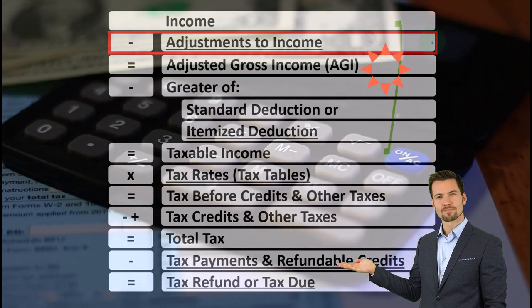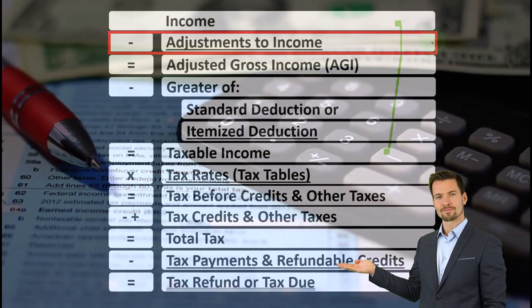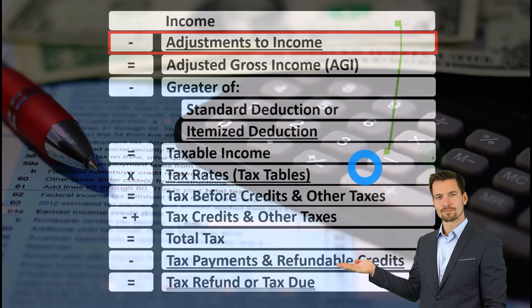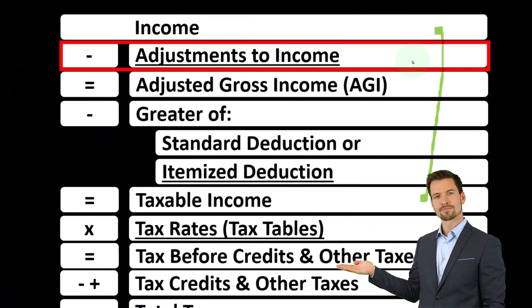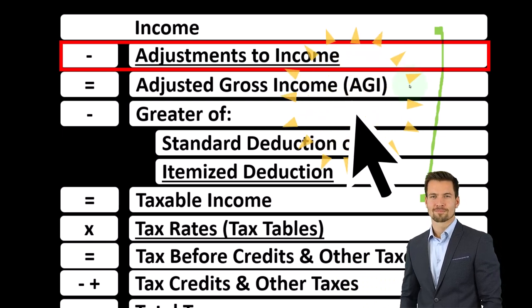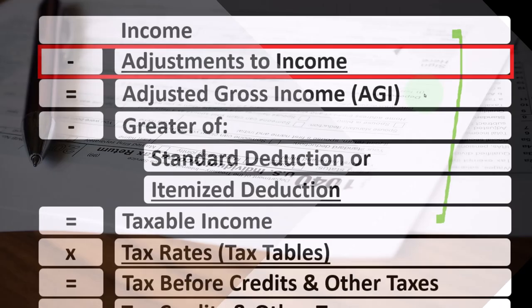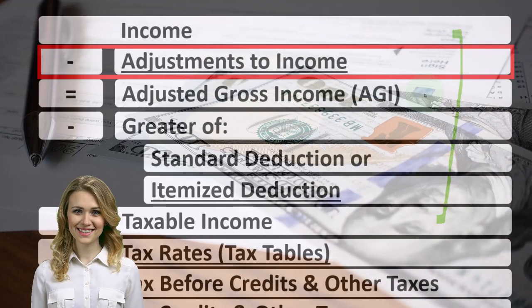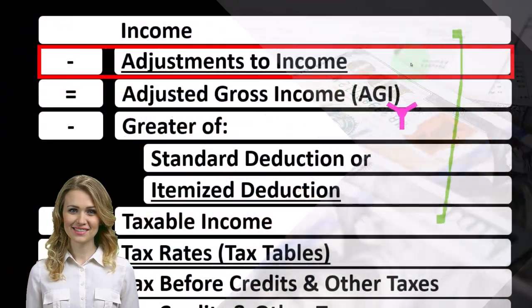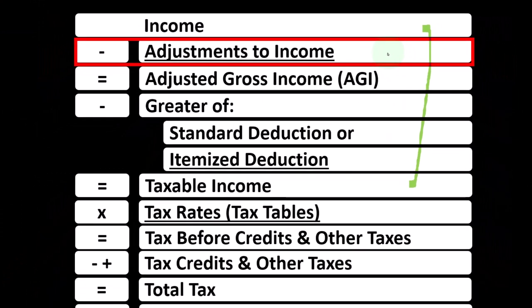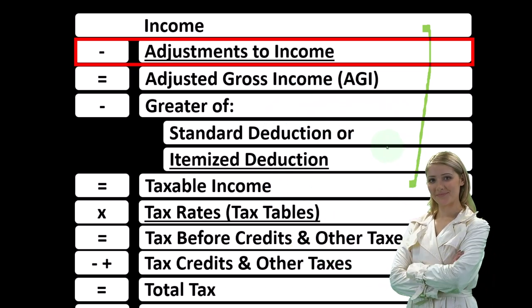The adjustments to income are essentially a type of deduction — a contra income account — decreasing income on the way down to the taxable income subtotal called adjusted gross income (AGI). AGI is an important subtotal used in calculations for phase-outs of deductions and credits. Also, above-the-line deductions don't have the same limitation as itemized deductions, which must clear a threshold like the standard deduction to provide a benefit.